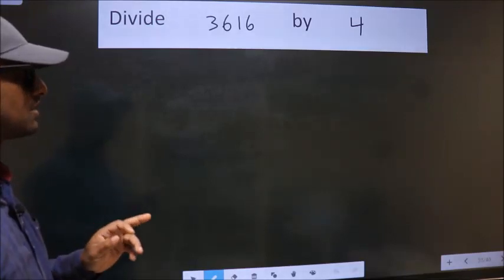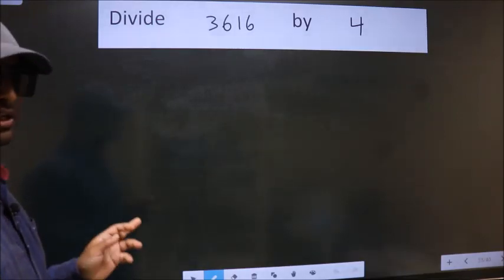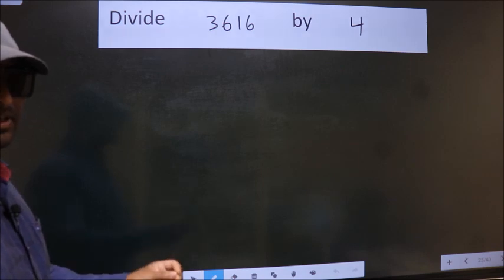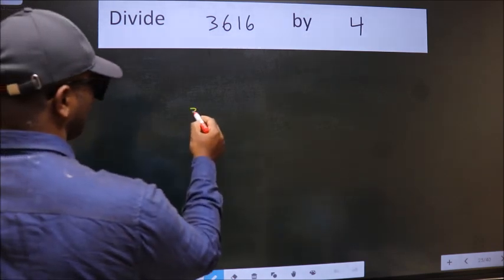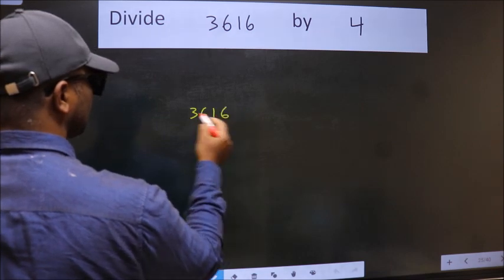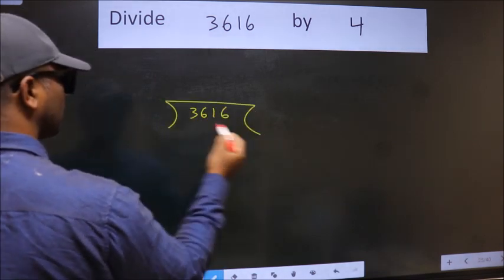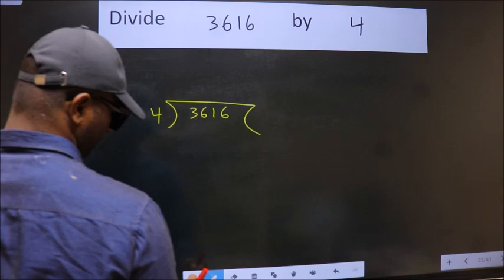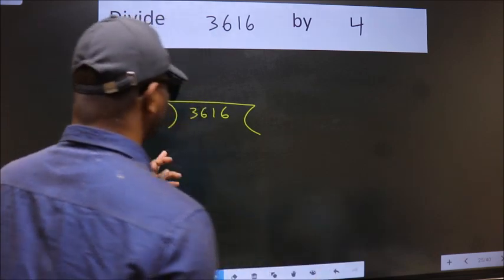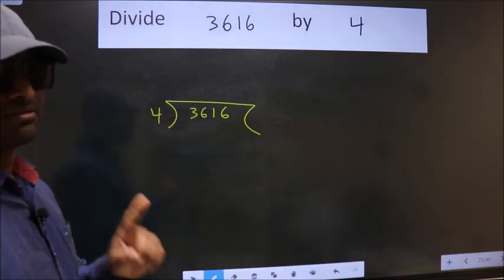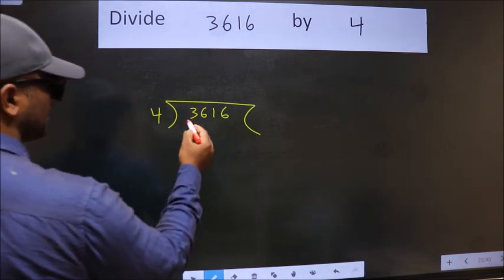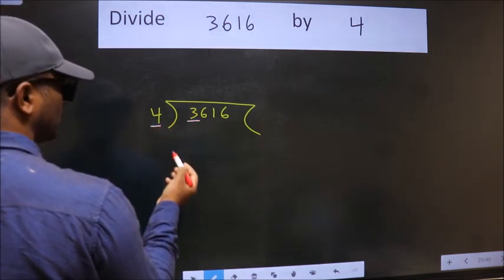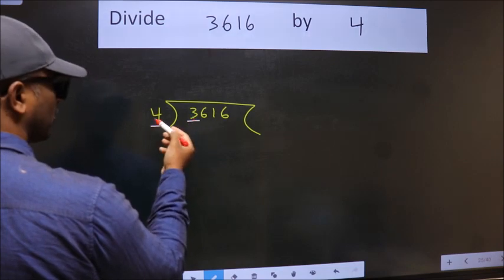Divide 3616 by 4. To do this division, we should frame it in this way: 3616 here, 4 here. This is your step one. Next, here we have 3, here 4. Three is smaller than four.